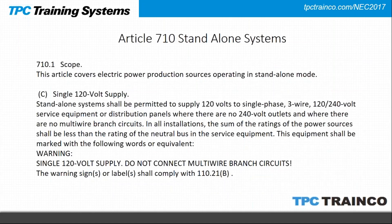Article 710 is for a standalone system — a much smaller system. It's going to supply a single 120-volt, single-phase supply. Picture a large solar panel on the side of the road supplying a couple of flashing lights. That's a standalone system, not connected to anything else, supplying a relatively small load.